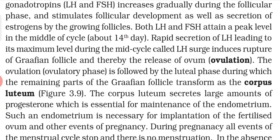The rapid secretion of LH leading to its maximum level during mid-cycle is called the LH surge. Whenever the LH surge occurs, it induces the rupture of the Graafian follicle, thereby releasing the ovum — this is ovulation. So when the LH surge occurs, the Graafian follicle bursts and releases the ovum.